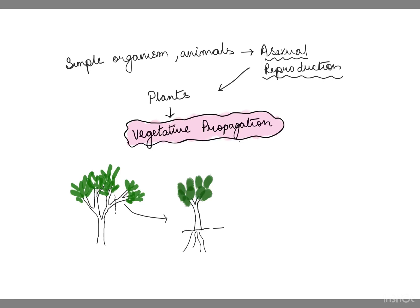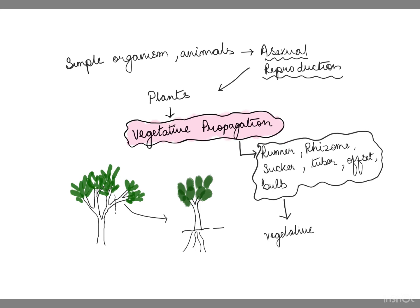Plant parts that can perform vegetative propagation include runners, rhizomes, suckers, tubers, offset, and bulbs. These structures are called vegetative propagules.